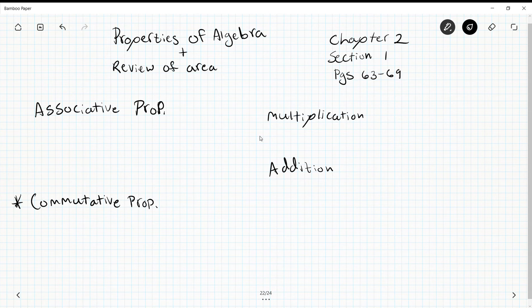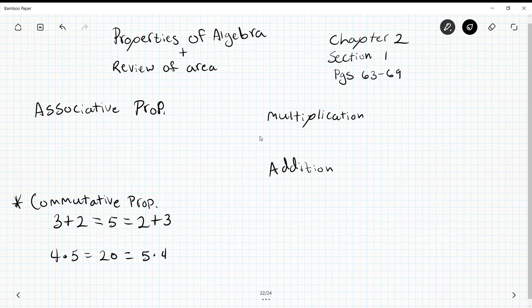This works for addition. Whether I do 3 plus 2, it should be 5 no matter if I do 3 plus 2 or 2 plus 3. This works for multiplication as well, where I have 4 times 5 is 20, which is the same as 5 times 4. All I'm doing is flipping the order in which I'm doing this operation.